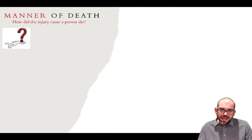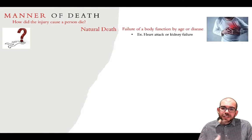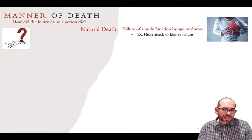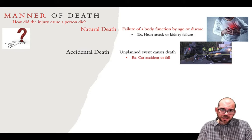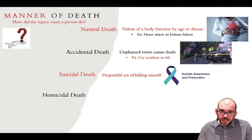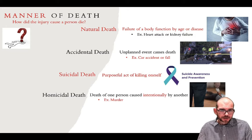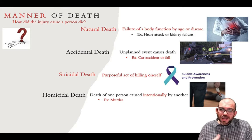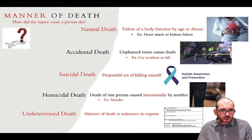One thing to consider in a death investigation is the manner of death — how did the injury cause a person to die? It could be a natural death, the failure of a body function by age or disease such as a heart attack or kidney failure. A death could be accidental — an unplanned event such as a car accident or heavy fall. It could be suicidal — a purposeful act of killing oneself. Or it could be homicidal — when the death of one person is caused intentionally by another, such as murder. Some deaths are undetermined if the manner cannot be explained.